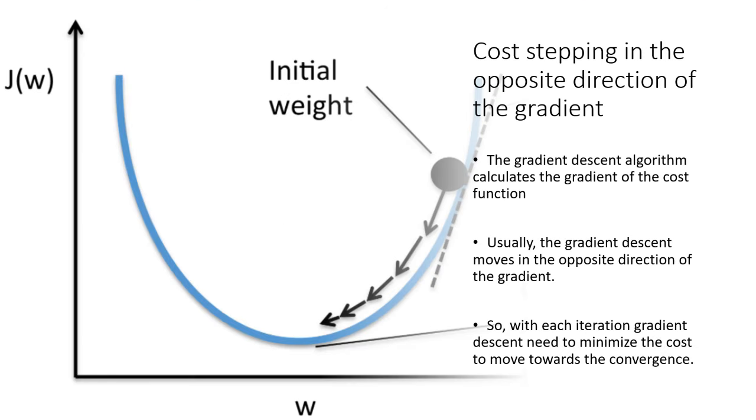As you can see in this image, where x-axis represents the weight and y-axis represents the cost function. And this is pretty much the shape of the graph. But the graph is not always that smooth. And the gradient descent algorithm calculates the gradient of the cost function. You can see this black ball, the black ball is the initial weight and this is the position of the initial cost function. And then it should keep going down step by step to the minimum level, where the cost function is the minimum. So usually the gradient descent moves in the opposite direction of the gradient. And with each iteration gradient descent need to minimize the cost to move towards the convergence. So when the cost function reach its minimum, that means our model converged. In other words, model training is done.